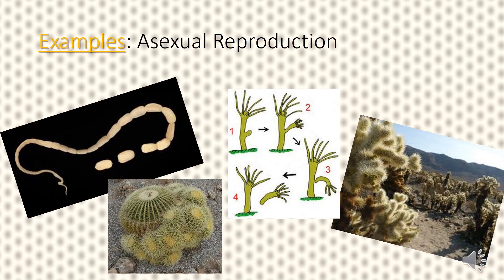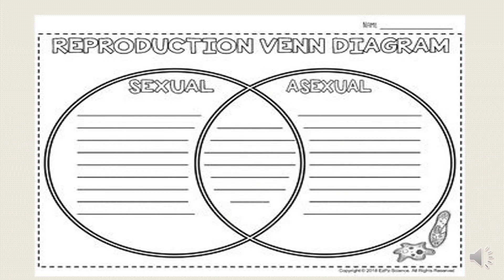Here are some examples of asexual reproduction. For your activity today, you have to answer a Venn diagram. Write the characteristics of sexual reproduction and asexual reproduction, and in the middle, write their similarities.